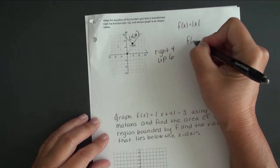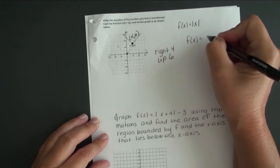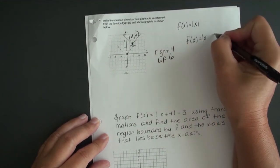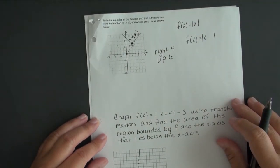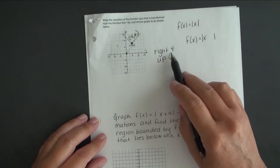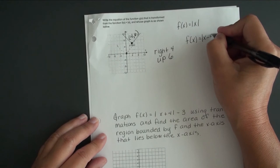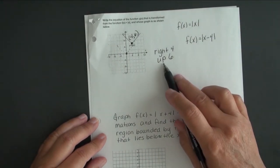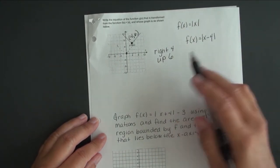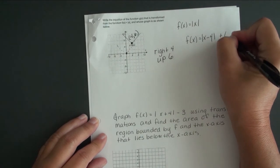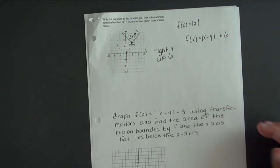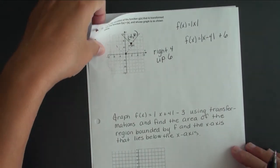So what we have done is moved this graph 4 to the right and 6 up. Taking my absolute value function, if I'm going to talk about right or left, I have to put that in with the x. So right 4 would be x minus 4, and then after the absolute value symbol, up 6 would be plus 6.